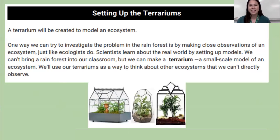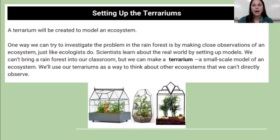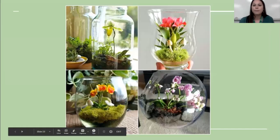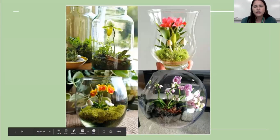One way we can investigate the problem in the rainforest is by making observations of an ecosystem like ecologists do. We can't bring the rainforest to our classroom or houses, but we can make a terrarium, which is a small-scale ecosystem. We are making some in class at KIPP. Because you're at home, you can try to make a terrarium using a cup with soil and seeds. Today we planted grass seeds in one cup and alfalfa seeds in another cup using nutrient-rich soil. This is a picture of what different terrariums could look like when they start growing — you see plants in the bottom, some moss, and plants growing out of the top.